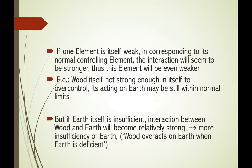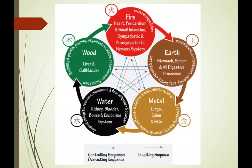If an element is itself weak relative to its normal controlling element, the interaction will seem stronger, making this element even weaker. For example, if wood itself is not strong enough to over-control, its action on earth may still be within normal limits. However, if earth itself is insufficient, the interaction between wood and earth becomes relatively stronger, causing more insufficiency of the earth.